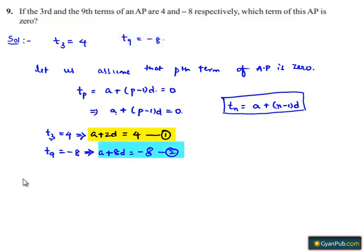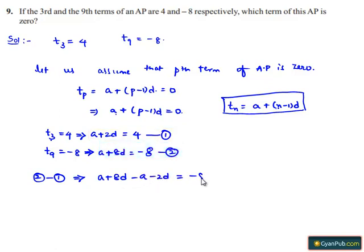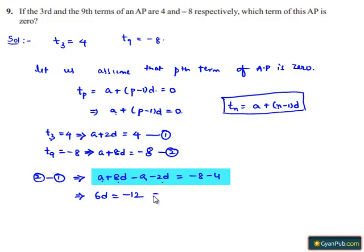Now subtracting equation 1 from equation 2: (a plus 8d) minus (a plus 2d) equals minus 8 minus 4. Here a minus a is 0, and 8d minus 2d is 6d, which equals minus 12. Therefore d equals minus 12 divided by 6, which is minus 2.